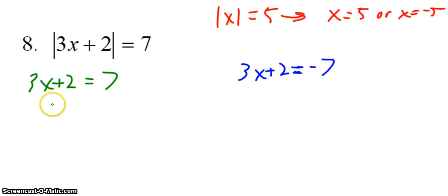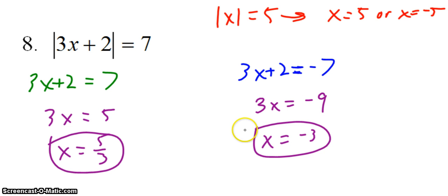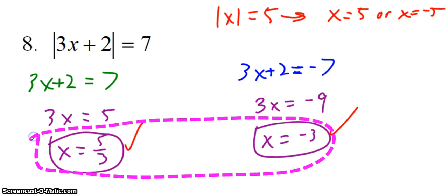Now I solve each of these. Three x equals five gives x equals five-thirds. Three x equals negative nine gives x equals negative three. I have to plug each back into the original equation to check for extraneous solutions. If I plug in five-thirds, five-thirds times three is five, five plus two is seven, and the absolute value of seven is seven — that's good. If I plug in negative three, three times negative three is negative nine, negative nine plus two is negative seven, and the absolute value of negative seven is seven — that works as well. Both are solutions.